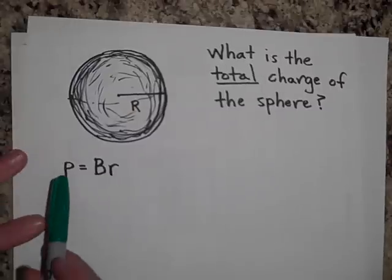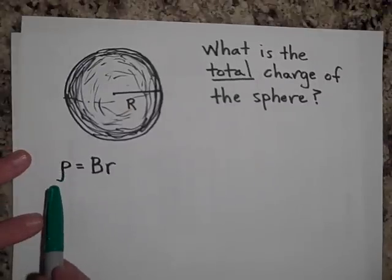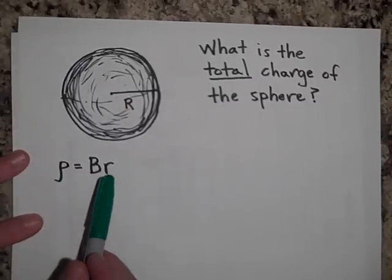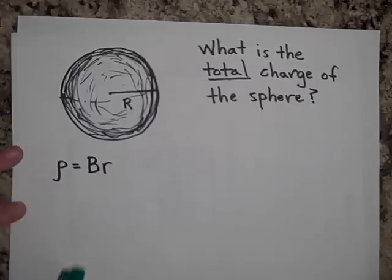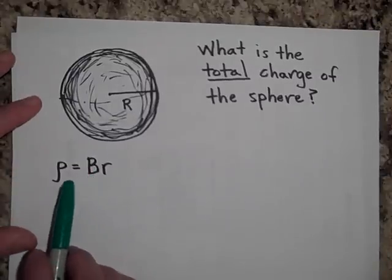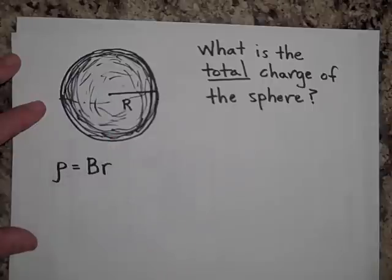And so we say that rho is not a constant anymore, but it's a function of R. But this, it's a constant B times R. Now, if you look at this, what it's saying then is when you're at the center of this sphere, there isn't any charge density at all.